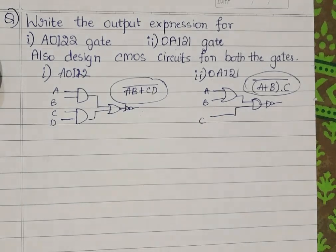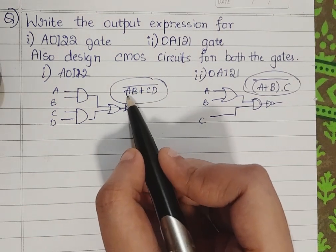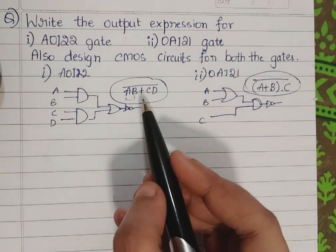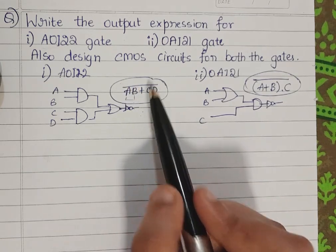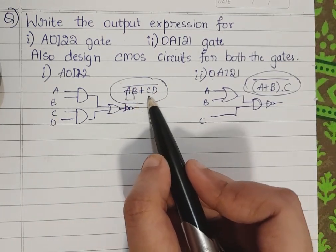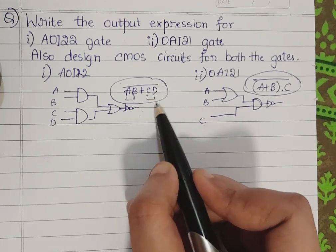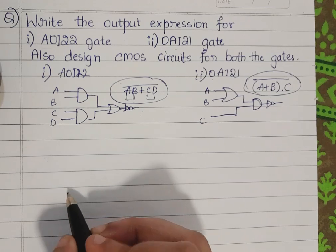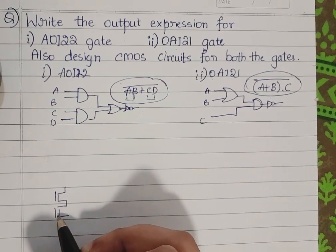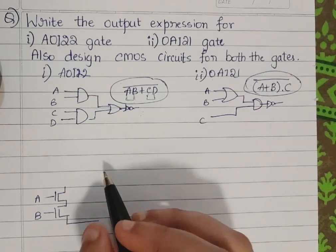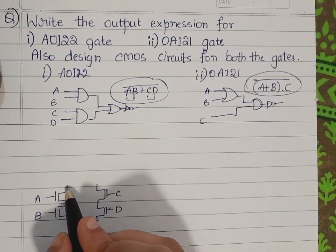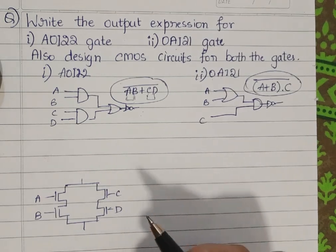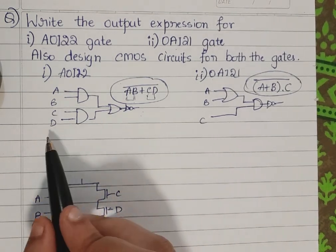Now let us see how to design the CMOS circuits for these two gates. Considering the AOI22 expression first, let us design the NMOS network by taking the inverse of this. AB will be in series, CD will be in series, and the whole structure of those two series combinations will be in parallel. So the NMOS structure has A and B in series, C and D in series, and both groups in parallel, connected to ground.